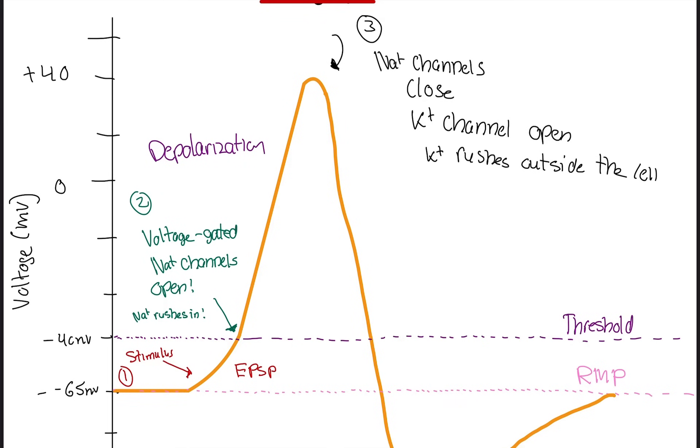So potassium is positively charged, right? And if positive stuff leaves the cell, we're going to get negative, we're going to get more negative. Potassium is positively charged, and we're shoving them outside. That's why the voltage goes down. And this is called repolarization. Repolarization.